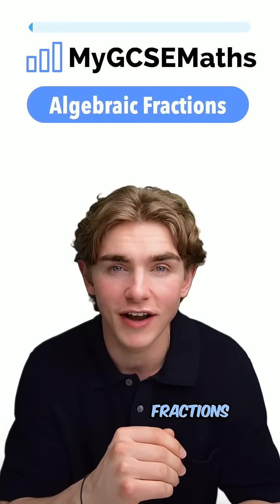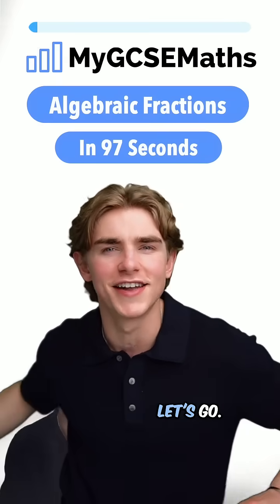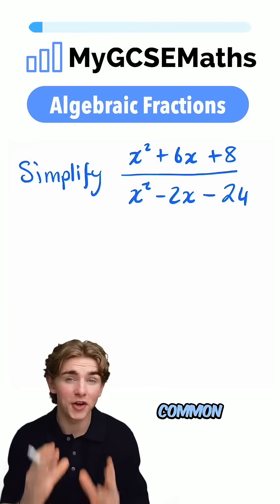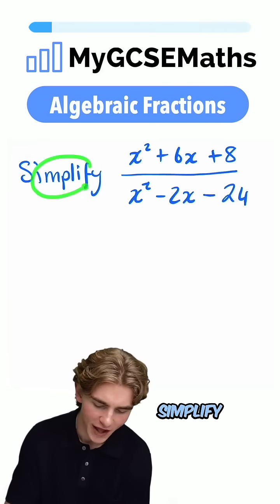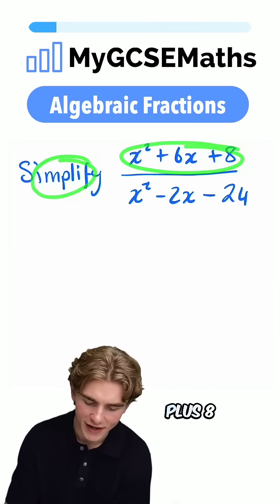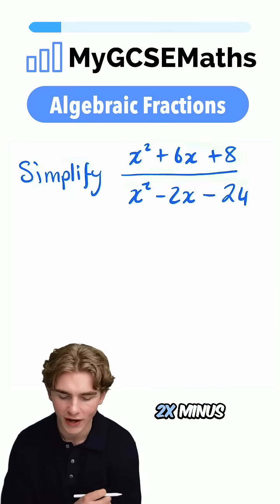GCSE Maths tricky algebraic fractions question in 97 seconds. Let's go. This is another really common exam question, especially in higher papers. Let's have a look. It says simplify x squared plus 6x plus 8 over x squared minus 2x minus 24.